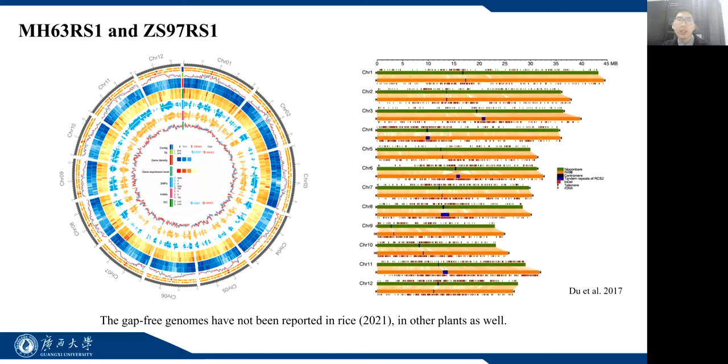In recent years, several high-quality rice genomes have been reported, including Shuhui and two Basmati rice genomes. But Gap-Free reference genomes have not been reported in rice or other plants as well.